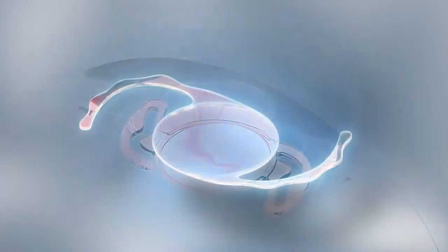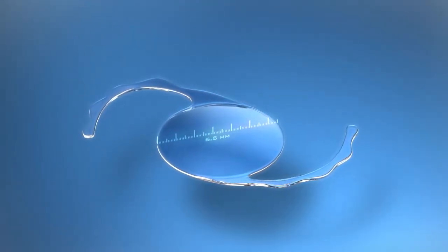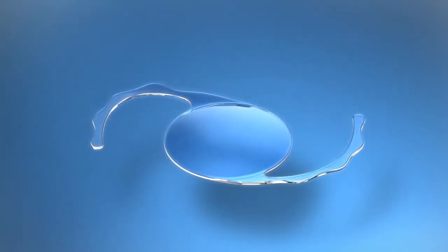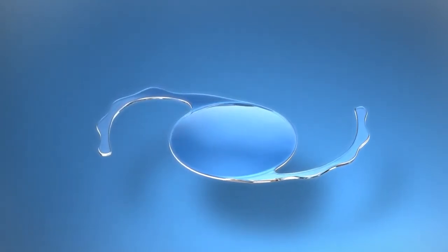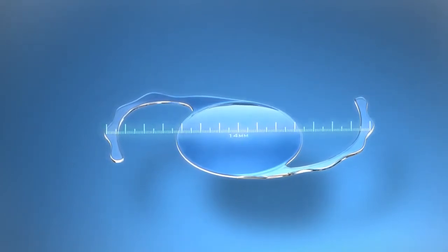An enlarged optic diameter of 6.5mm offers a reduced risk of pupillary block and photic effects, both associated with the piggybacking of two biconvex lenses. The lens has a 14mm overall diameter to ensure secure, stable fixation in the ciliary sulcus.